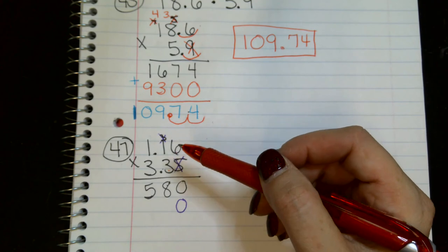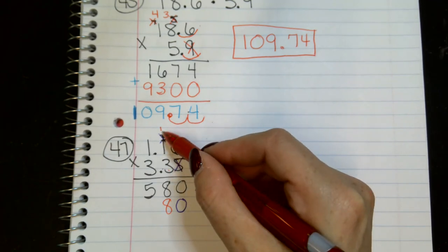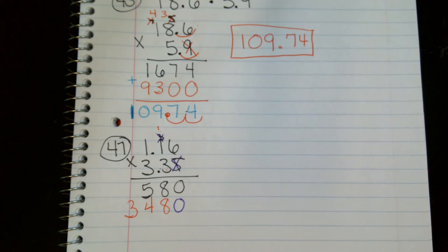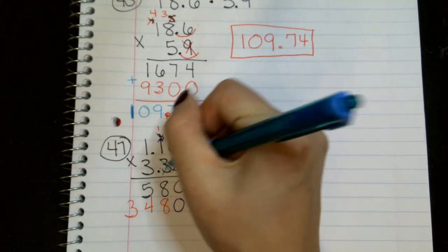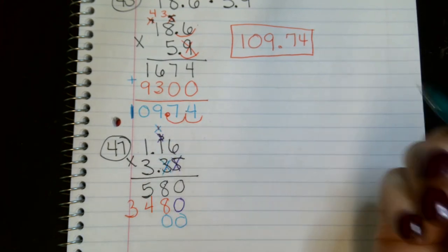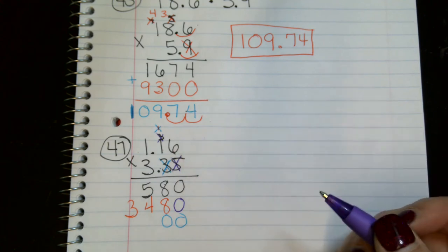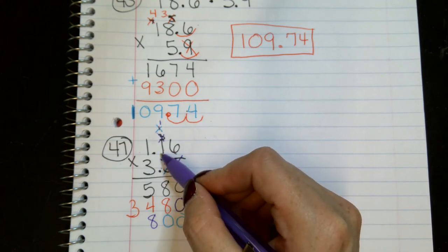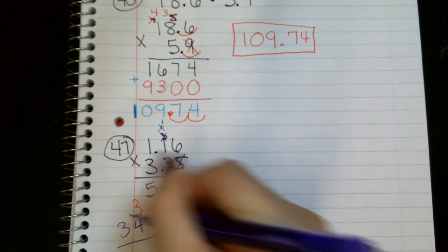What's 3 times 6? 18. Put an 8. Carry your 1. What's 3 times 1? Plus 1? 4. Awesome. What's 3 times 1? Nice. Very good. All right. Now, we're moving on to this number in the tens, this number here. So, what we're going to do is cross him out. Cross his friends out. That's right. We put a 0 for that guy and a 0 for that guy. Nice. All right. Let's keep going. What's 3 times 6? 18. Carry your 1. What's 3 times 1? What's that? Plus 1? Nice. And what's 3 times 1? Nice. Now, let's add up all our partial products.